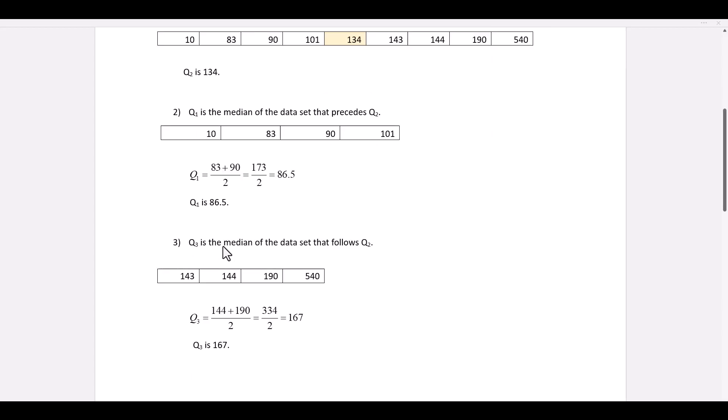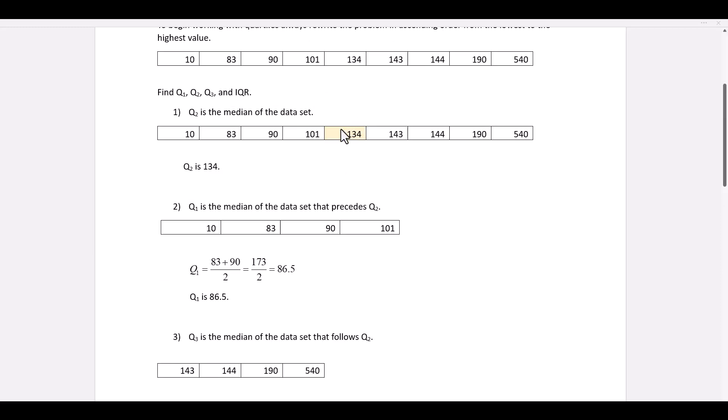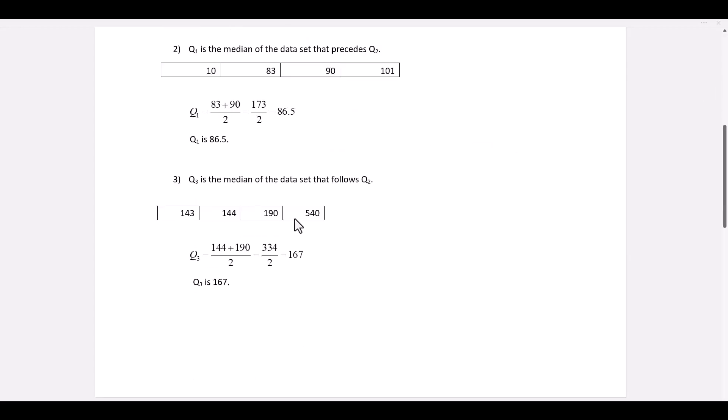Quartile 3 is the median of the data values that follow quartile 2. So now we focus on these four values. And since there's four values, and that's even, we find the midpoint of the two middle values, which is 167. Quartile 3 is 167.